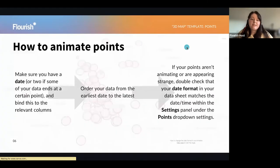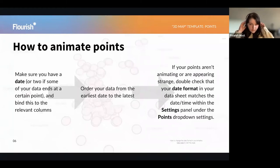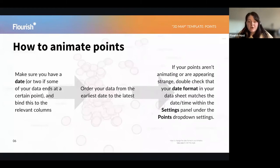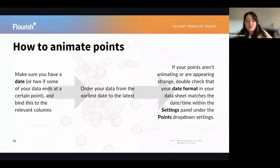So I'm just going to go back to my slides. We're now going to go on to how to animate points. To animate points, make sure that you have a date — or two if some data ends at a certain point — and bind these to the relevant columns. You will want to order your data from the earliest date to the latest, just so the timeline goes consistently without any sharp increases or decreases. And if your points aren't animating correctly, double check the date format in your data sheet so that it matches with the date and time setting.